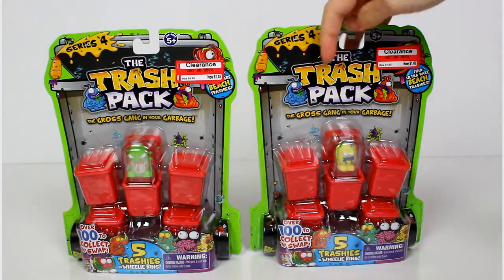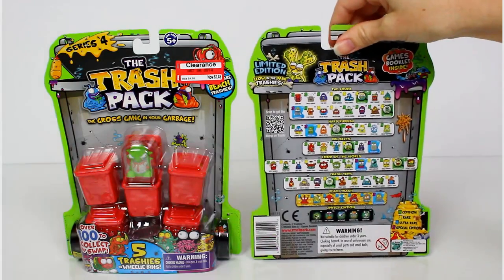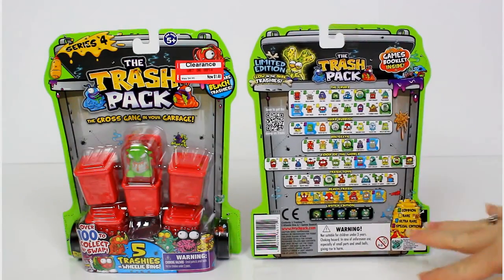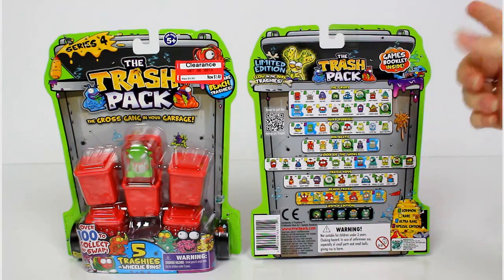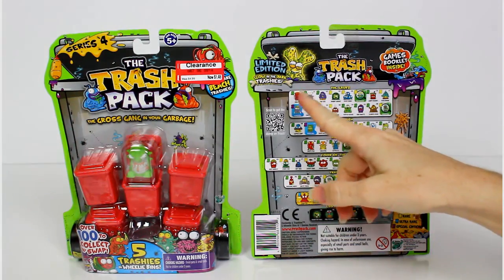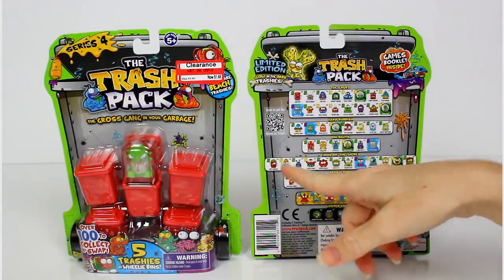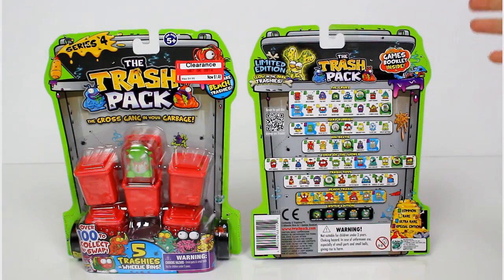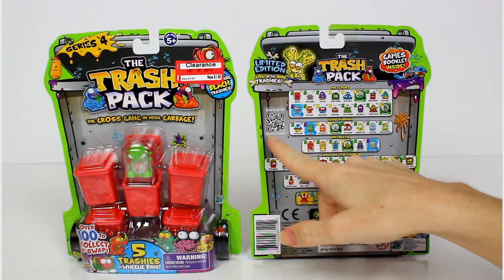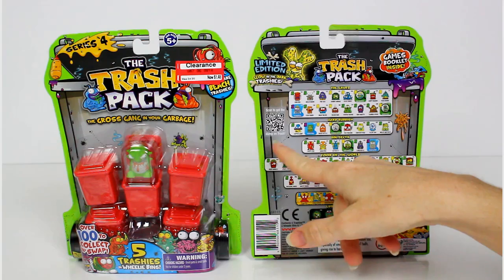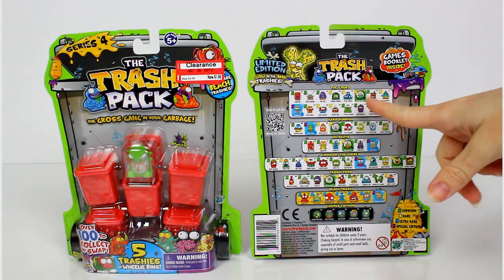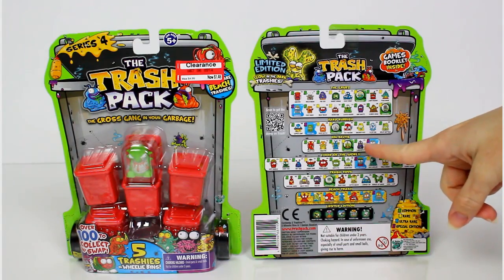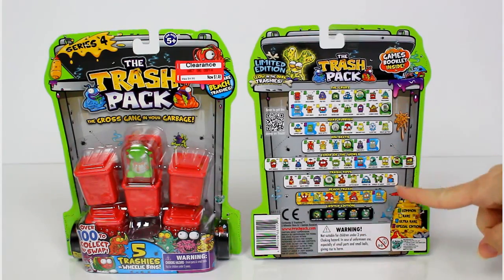These are for ages five and up. On the back it shows a variety of the different ones you can get - there's probably more than this. There's also a chance to get limited edition glow-in-the-dark trashies. There's a game booklet inside. I noticed this QR code on the side that says 'scan to get the dump on trash.'